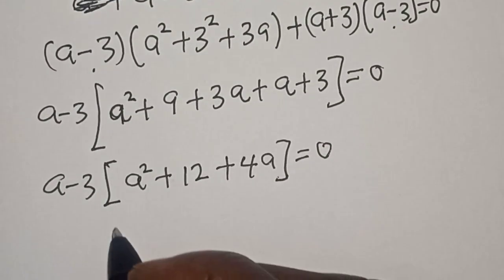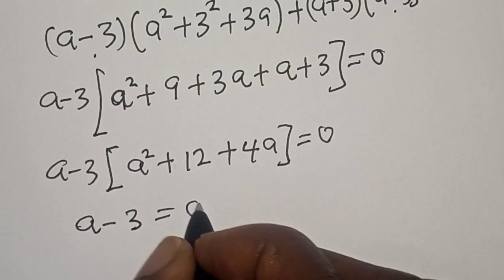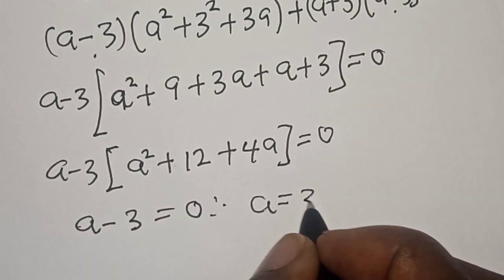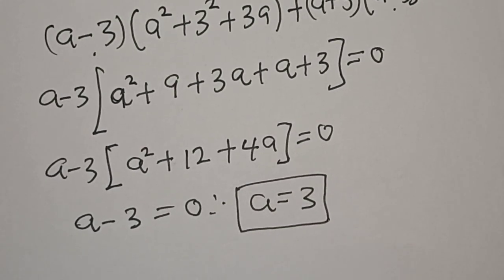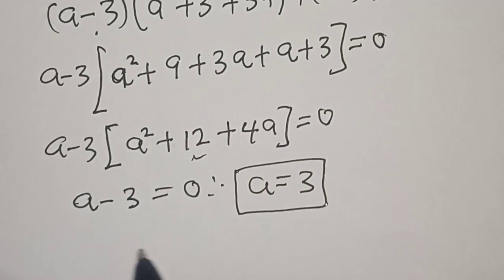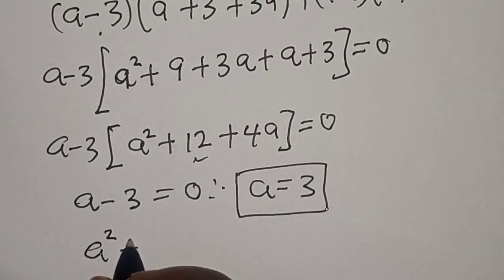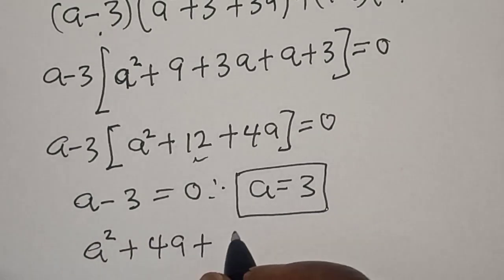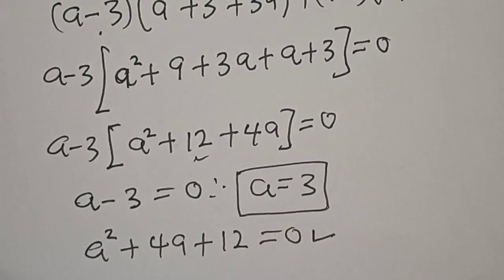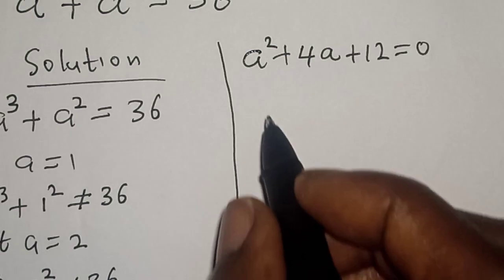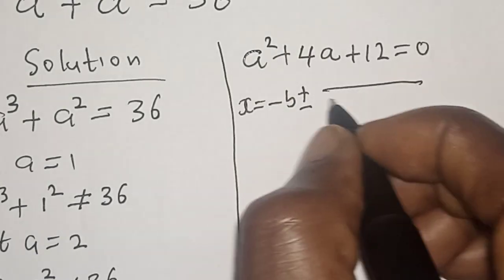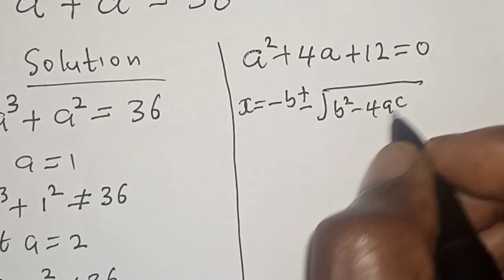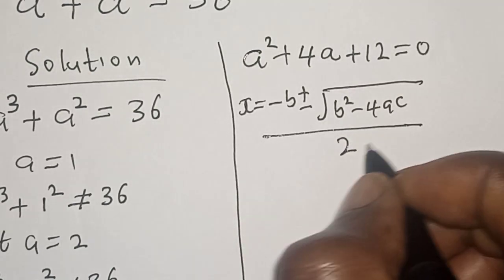Now we have two cases. Case one: a minus 3 equal to 0, therefore a equal to 3. For the second case, we want to find the real value of a. We have a squared plus 4a plus 12 equal to 0, which is a quadratic equation solved using the quadratic formula: a equals minus B plus or minus square root of B squared minus 4AC, divided by 2A.